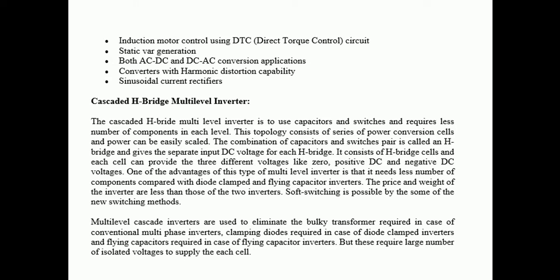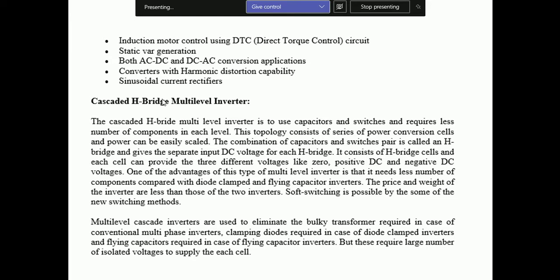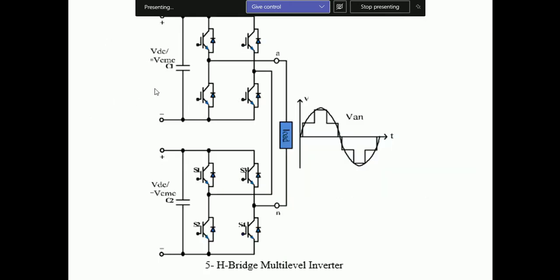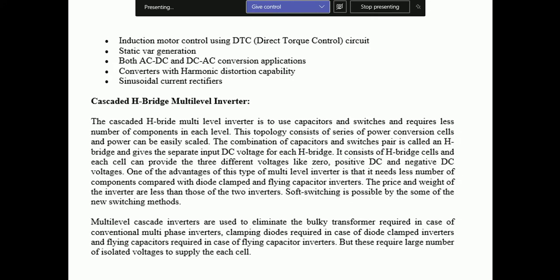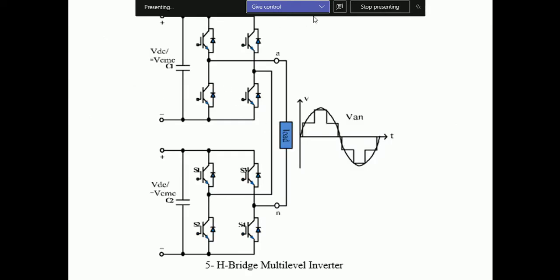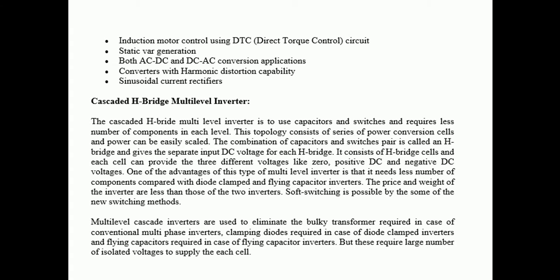Finally, this is the cascaded H-bridge multilevel inverter. In this topology, we have cascaded H-bridge modules. Cascade means to connect two blocks in series such that the output of one is the input of the other. The cascaded H-bridge multilevel inverter uses capacitors and switches and requires fewer components per level. The cascaded H-bridge module consists of a series of power converter cells.